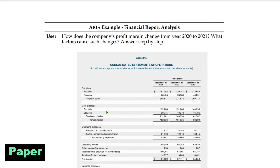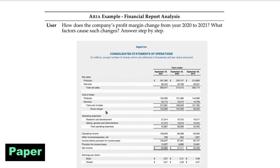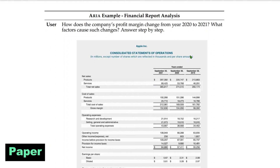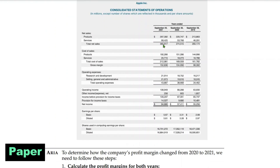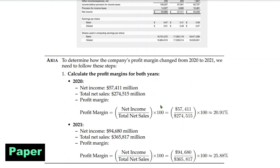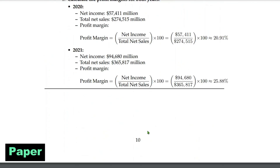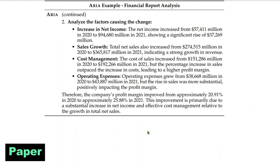Another example is financial report analysis. We ask how the company's profit margin changed from 2020 to 2021 and what factors caused that change. The first column is 2021 and the second is 2020. Aria calculates the profit margins — 20% for 2020 and 25.88% for 2021 — and then lists the probable causes for the rise in profit margin. Pretty cool.